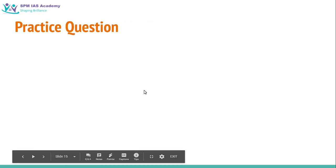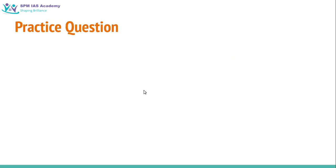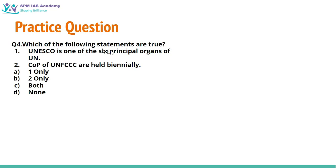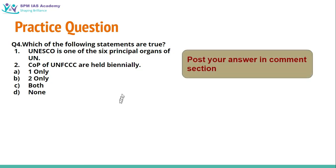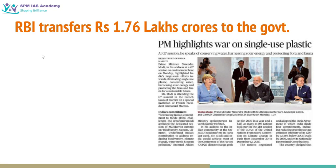Let us have a practice question on the basis of this topic. Which of the following statements are true: UNESCO is one of the six principal organs of the United Nations, and Conference of Parties of the United Nations Framework Convention on Climate Change are held biennially? You can post your answer in the comment section.